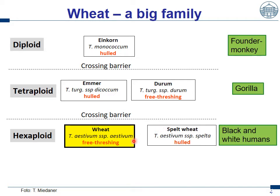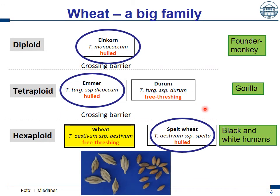The next point is wheat harvesting. When we harvest wheat with a combine harvester, we get kernels. The same holds true for durum wheat. But when we harvest spelt, emmer, and einkorn, we get husks — it's a hulled wheat that we harvest. The husk is nothing else than grains inside with the husk outside, and we need a further working step in the mill to de-hull the spelt and get out the kernels.